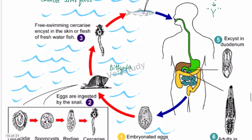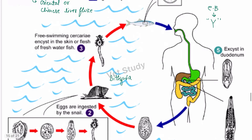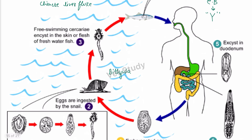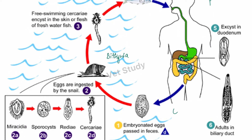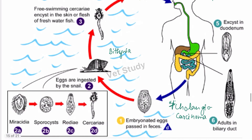Regarding pathogenesis, since this parasite resides in the bile duct, it causes catarrhal cholecystitis, biliary stasis, and cholangitis. Most importantly — and this is very frequently asked in exams — it causes cholangiocarcinoma. Clinical findings include diarrhea, abdominal pain, and jaundice.